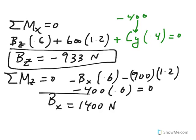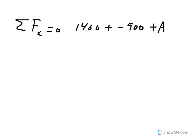And then the rest of the reactions can be determined easily. The only thing we haven't, the only two equations that we haven't used are sum of the forces in X equals 0. So here we have 1400 and minus 900. And of course, A sub X, which is the unknown. So A sub X from here becomes negative 500.